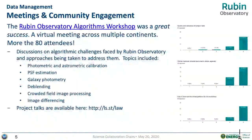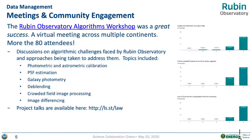The next chart is on the algorithms workshop. In March, the week of the 17th, we held the Rubin Observatory Algorithms Workshop. This was originally planned to be an in-person workshop at Princeton; we had about 80 or so people registered and were prepared for a very exciting in-person event.